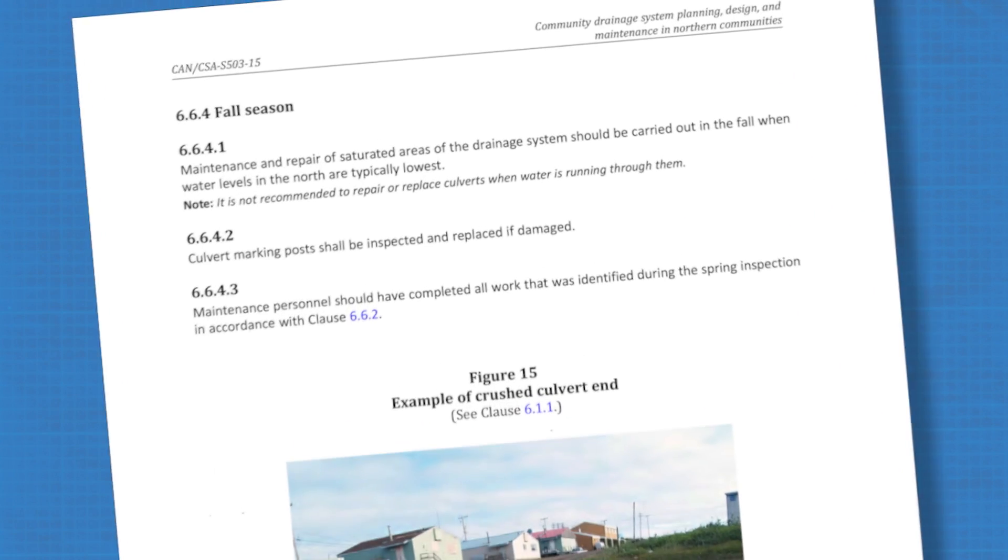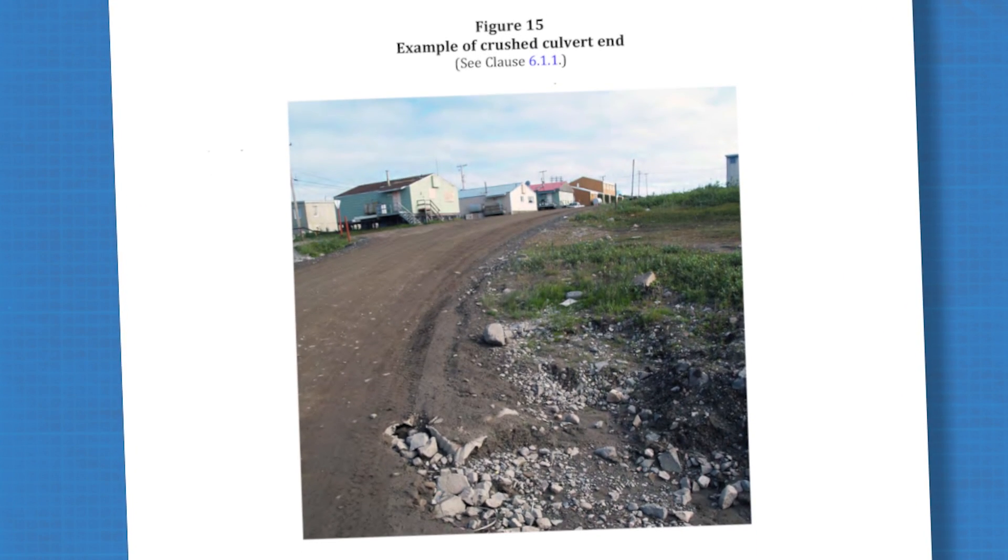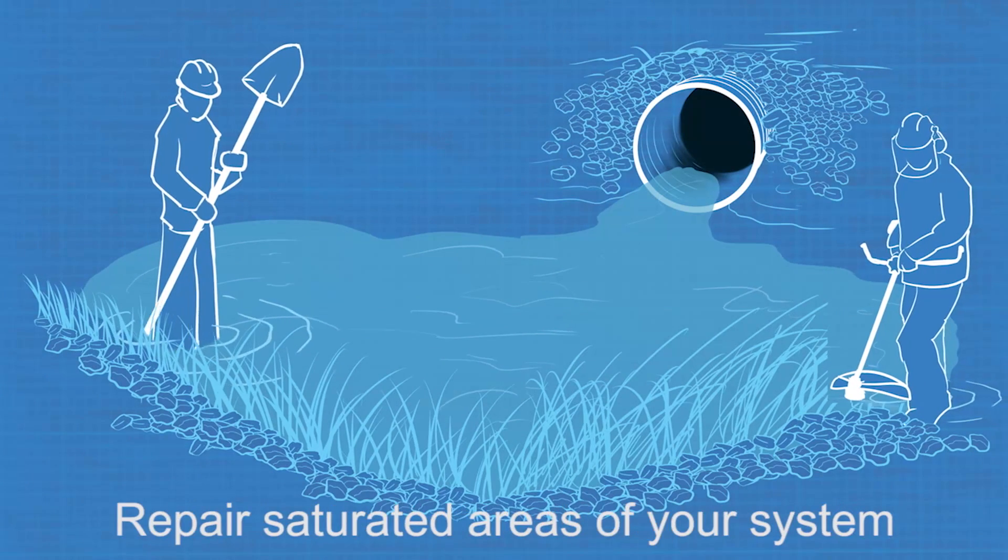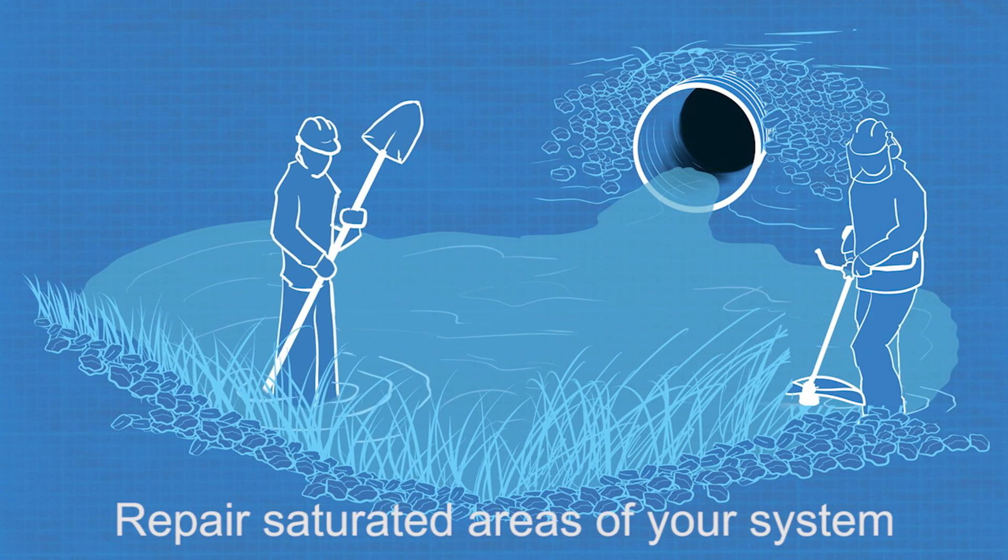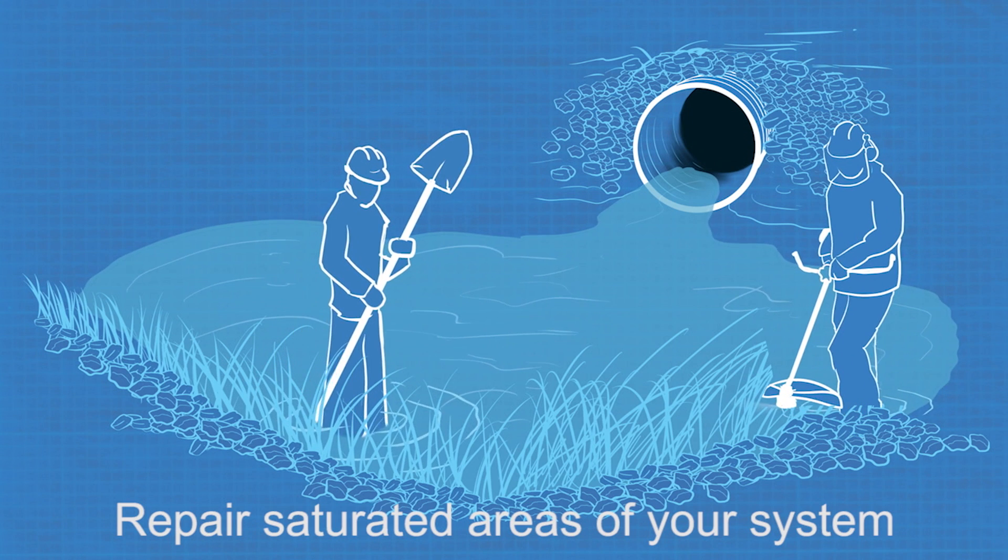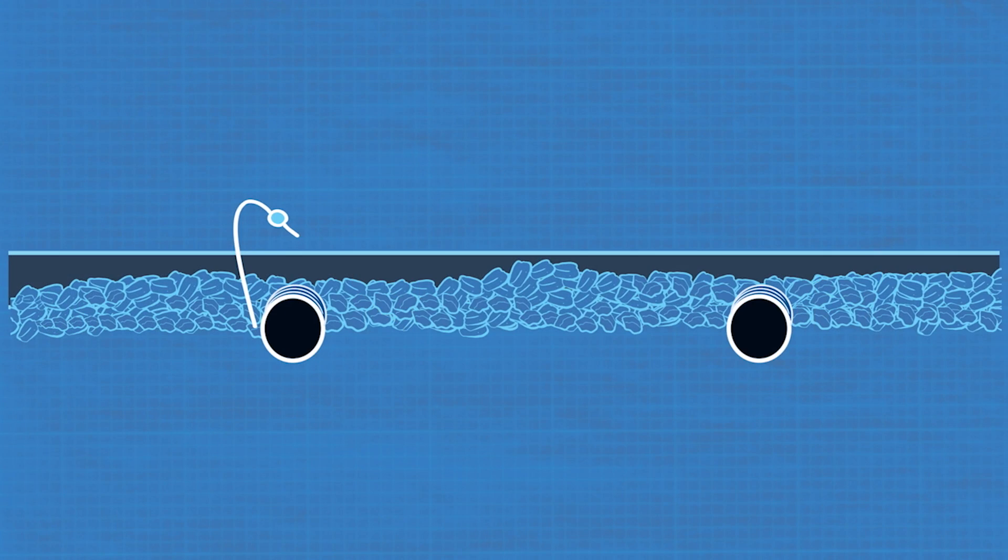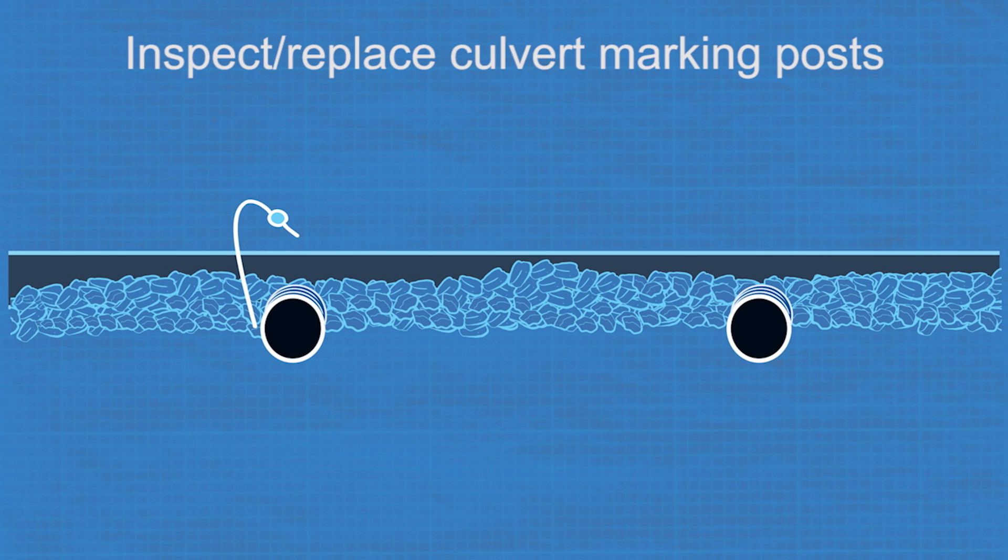In the fall, water levels in the north are usually at their lowest. The National Standard of Canada recommends that maintenance and repair of saturated areas of the drainage system must be done in the fall. Now is a good time to inspect culvert marking posts and replace any that have become damaged. Remember how important these are in winter, when culvert ends can't be seen because of snow cover.